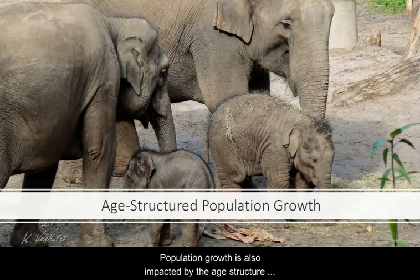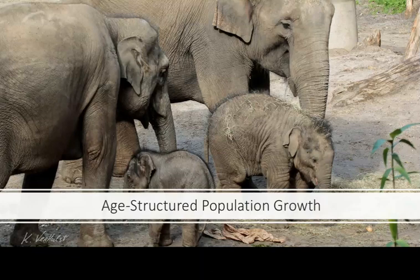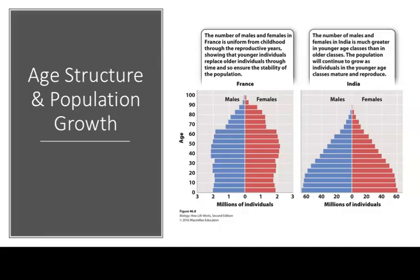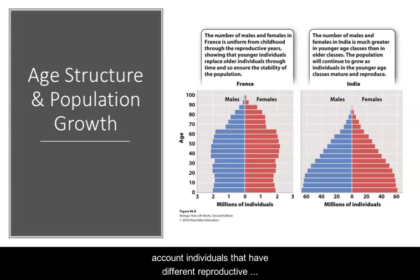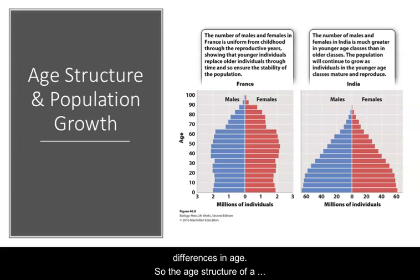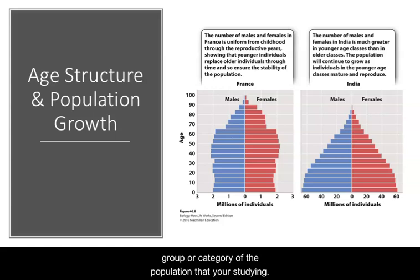Population growth is also impacted by the age structure of a population. Not all organisms in a population contribute equally to population growth — some reproduce more than others. It's useful to take into account individuals that have different reproductive capacities, which most often depend on differences in age. The age structure of a population is the number of individuals within an age group or category of the population you're studying.